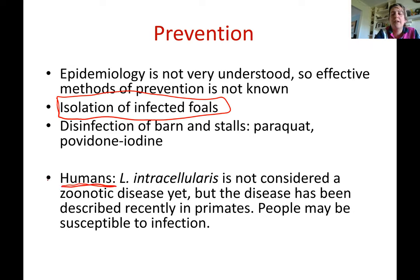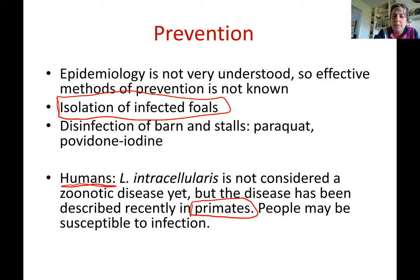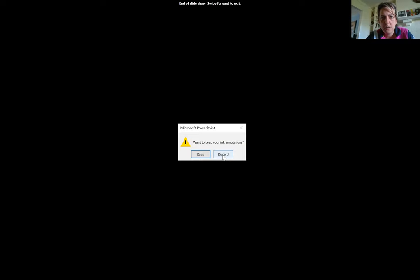Lawsonia intracellularis is not currently considered a zoonotic disease, but it has been described in primates, so we don't know if it can pass to people. As of now we don't think it can, but it may be possible. If you have any questions, don't hesitate to reach out. This has been an overview of Lawsonia intracellularis, which causes proliferative enteropathy in young horses.